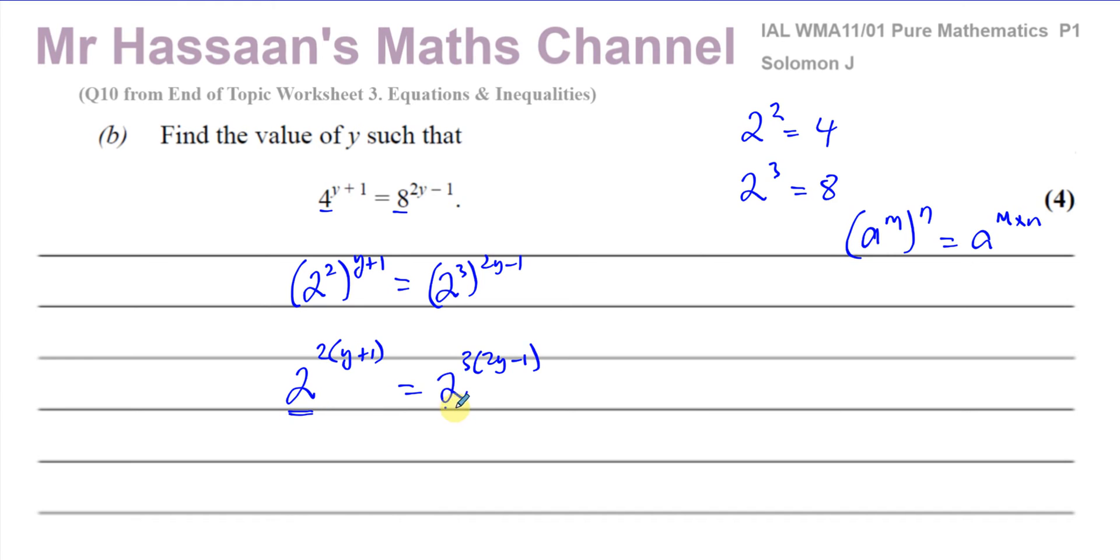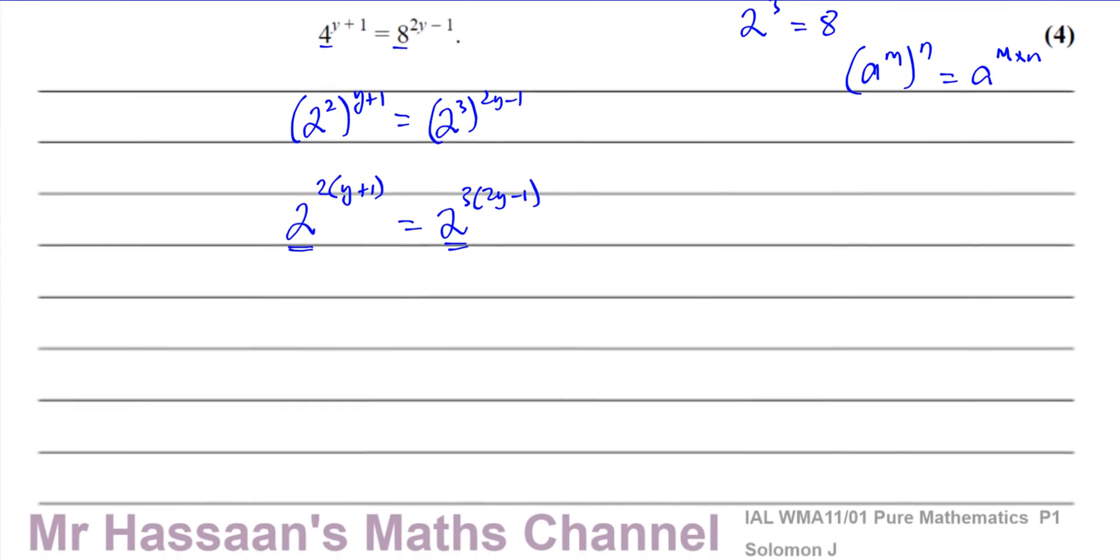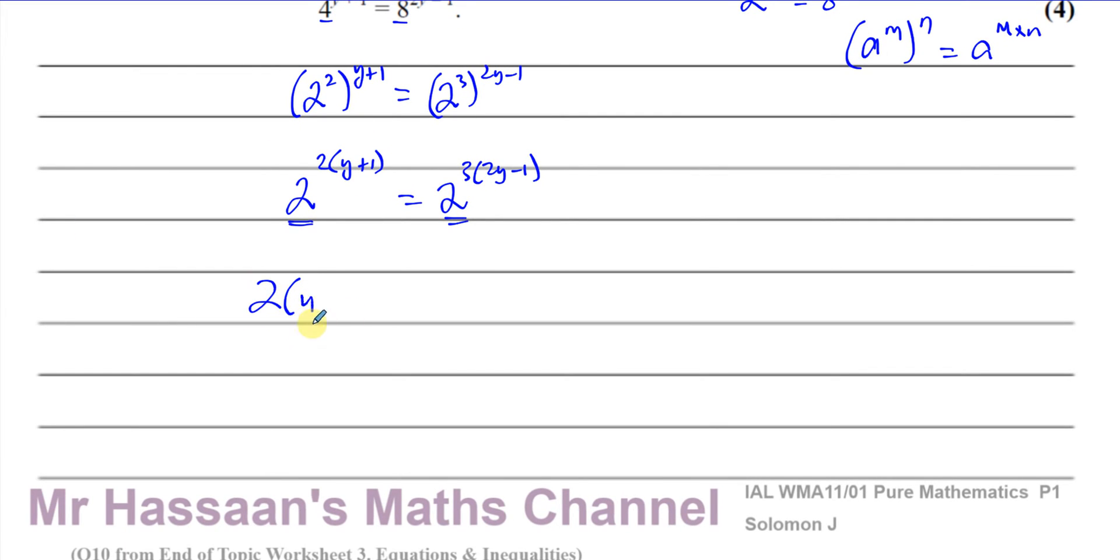So now I have achieved my objective, the bases are the same. Once I know the bases are the same I can now equate the powers. So I know that 2 times y plus 1 must be the same as 3 times 2y minus 1. Now I can solve this equation and find the value of y which satisfies this equation.